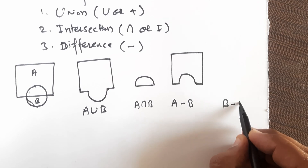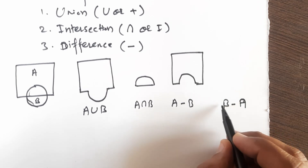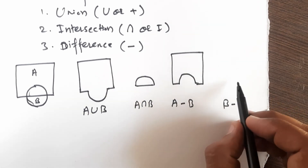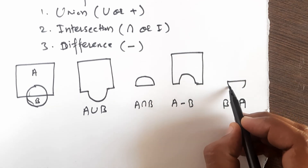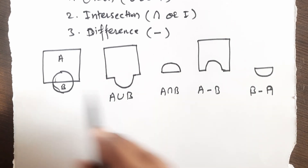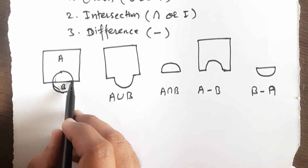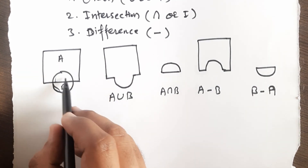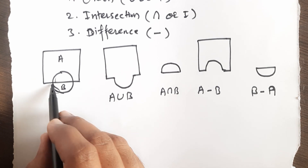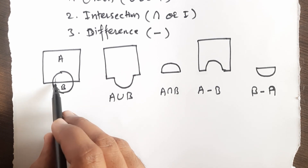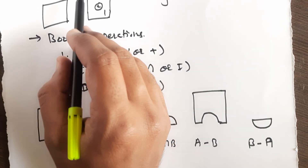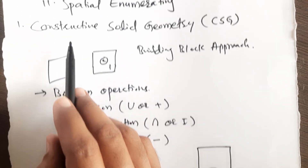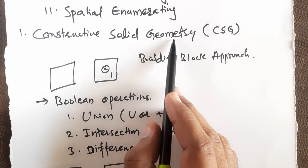If instead you subtract A from B — that is, B minus A — then the portion of B that was inside A is removed, and only the remaining part of B is left. So these Boolean operations — Union, Intersection, and Difference — are used to create geometry in the method called Constructive Solid Geometry.